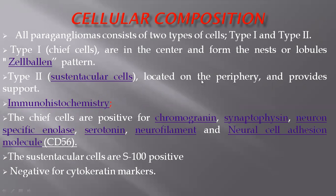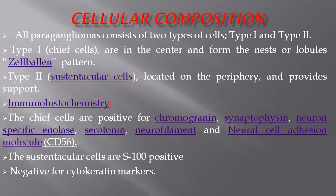In terms of cellular composition, paraganglioma cells consist of two types. The center is composed of type 1 or chief cells, which are surrounded by the sustentacular cells or supporting cells, which are the type 2 cells. When there is a tumor, the type 1 or chief cells form nests or lobules called the Zellballen pattern — a German word meaning 'balls of tumor.' The type 1 chief cells in the center are mainly responsible for endocrine function and catecholamine release, so they are positive for neuroendocrine markers.